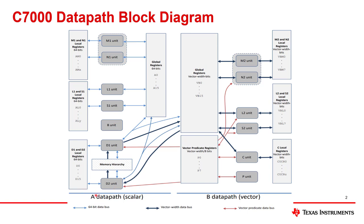There's an A side and a B side. The A side is what we call scalar size, which is to say it's built with operations that work on 64 bits. I can do operations smaller than 64 bits, but 64 bits is the natural width of the A side.